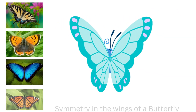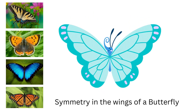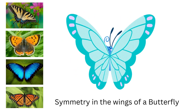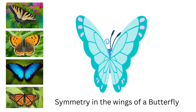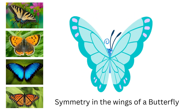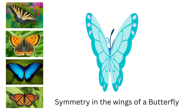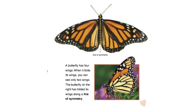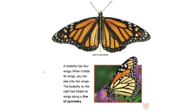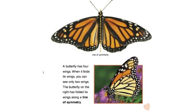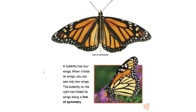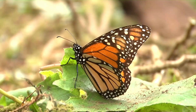Nature is full of symmetry. This butterfly has symmetry — its wings look the same on both sides. When the butterfly folds its wings together, the wings fit on top of one another. A butterfly has four wings; when it folds its wings, you can see only two wings. The butterfly on the right has folded its wing along a line of symmetry.